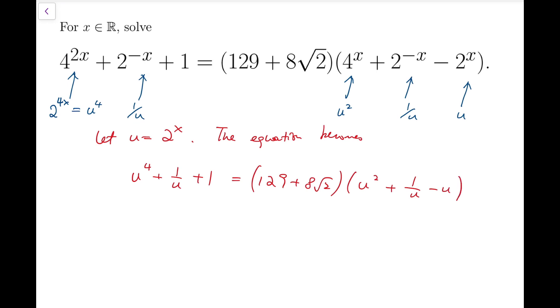Now multiply both sides by u. That will have u to the 5 plus u plus 1 equals this number times u cubed minus u squared plus 1.